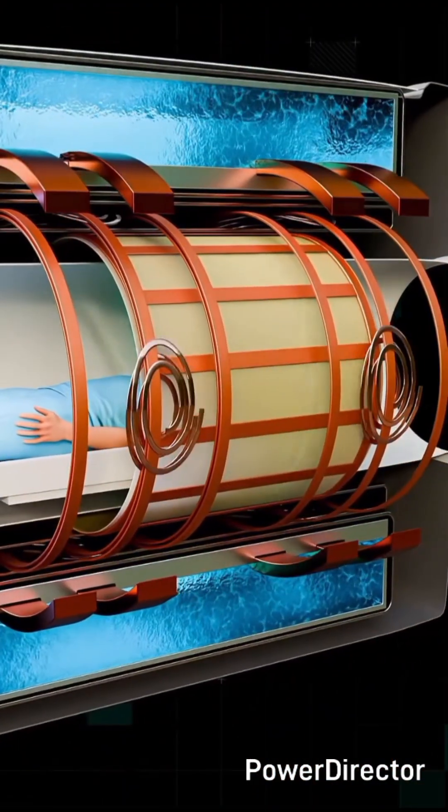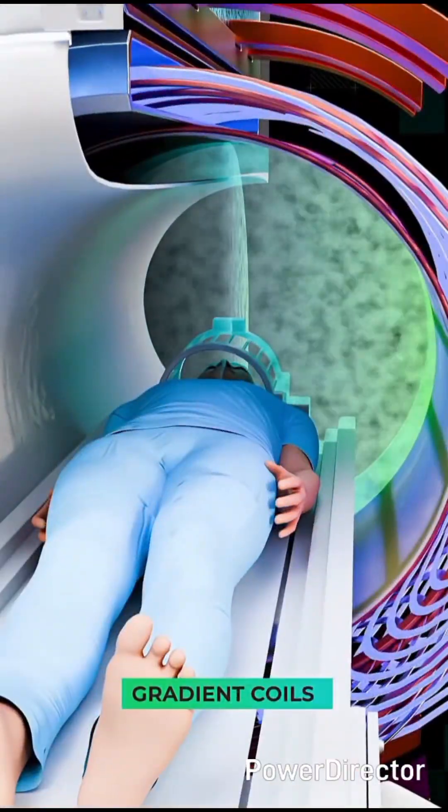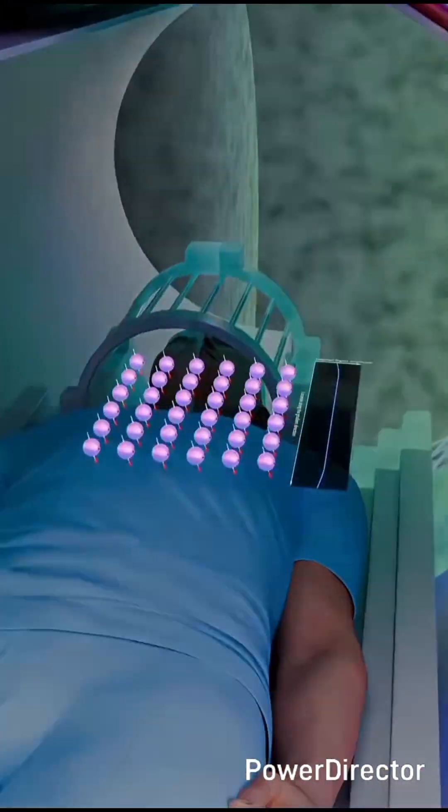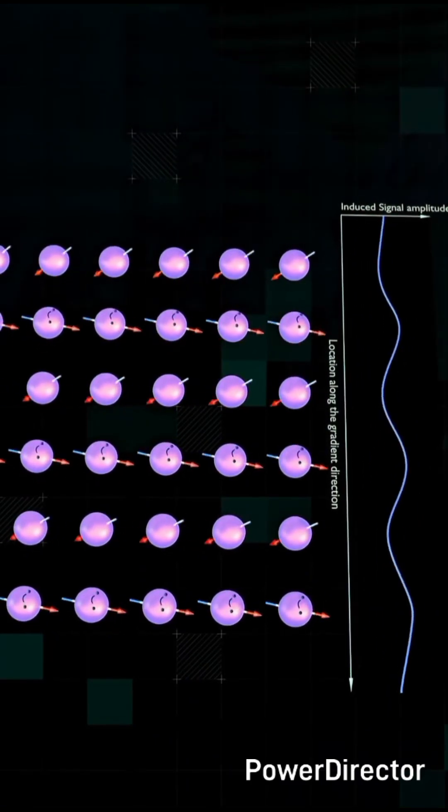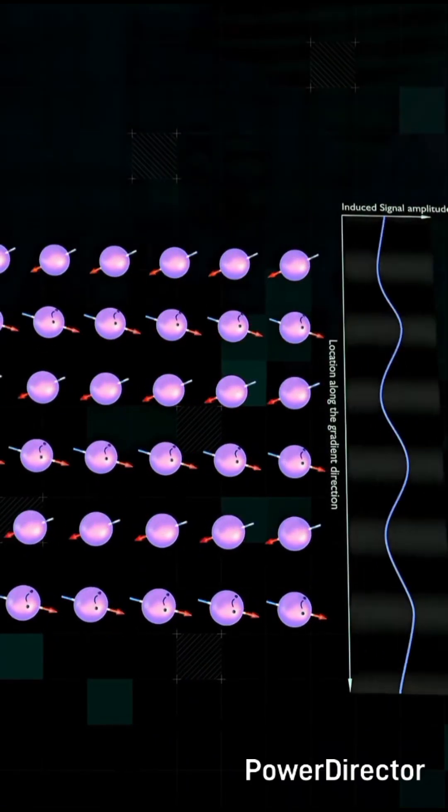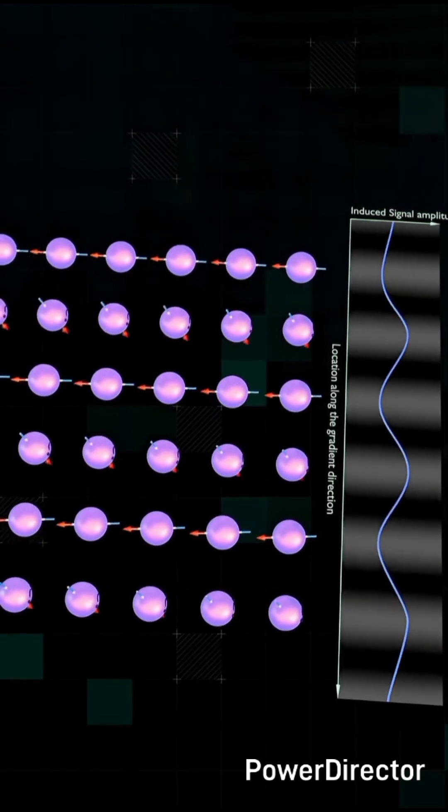To deal with this, these large spiral coils are activated. They create tiny variations in the magnetic field. They make protons in different parts of the body wobble at slightly different phases. This transforms the signal into striped patterns, black and white bands that encode spatial information.